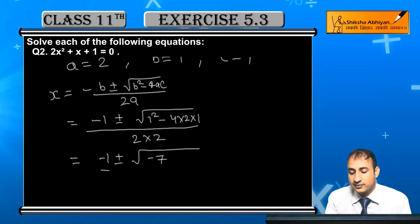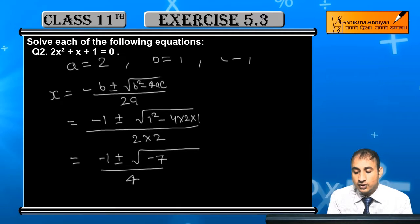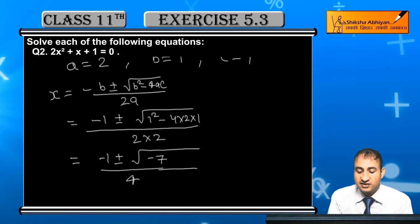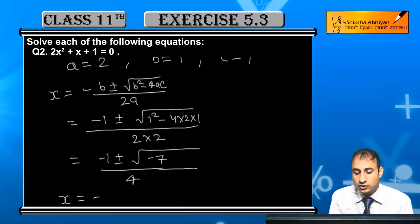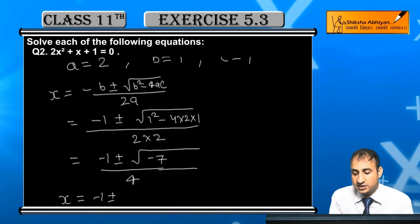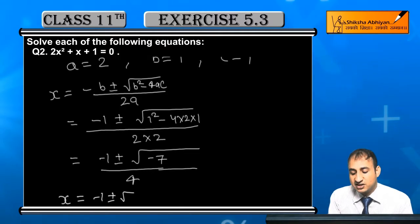So the value of x in this case—x is equal to minus 1 plus or minus, now square root of minus 7 can be written as 7 iota, divided by 4.